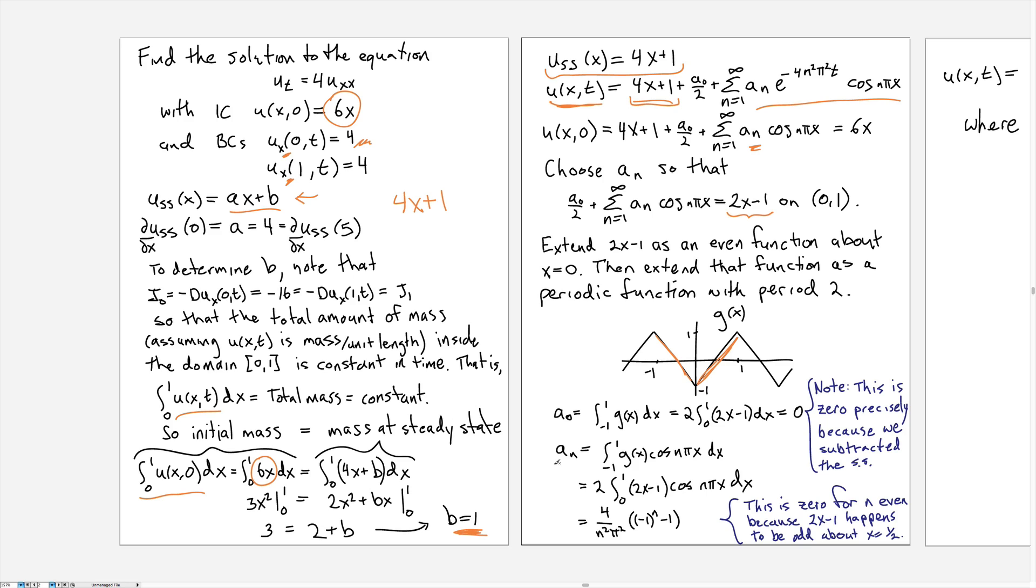So the Fourier coefficients, the formula for the coefficients in that case, the a_n are given by the integral, well twice the integral from 0 to 1 of 2x - 1, which is the difference between the initial condition and the steady state. So it was u(x,0) - u_ss. That's where we got this 2x - 1.